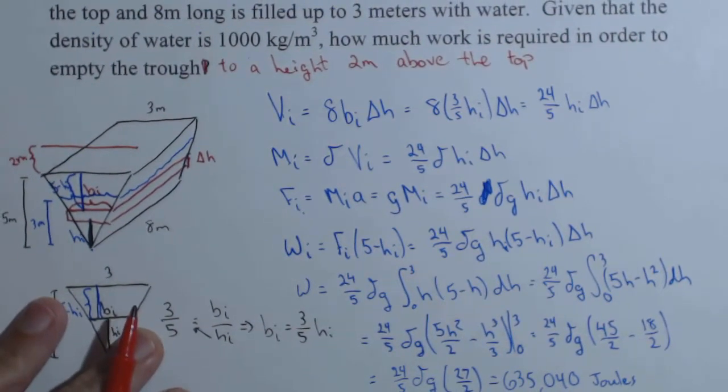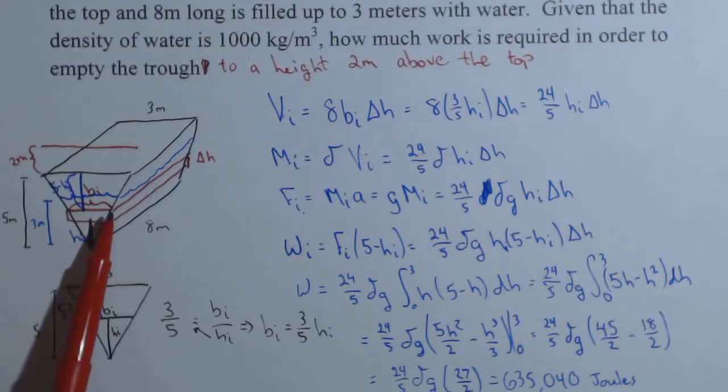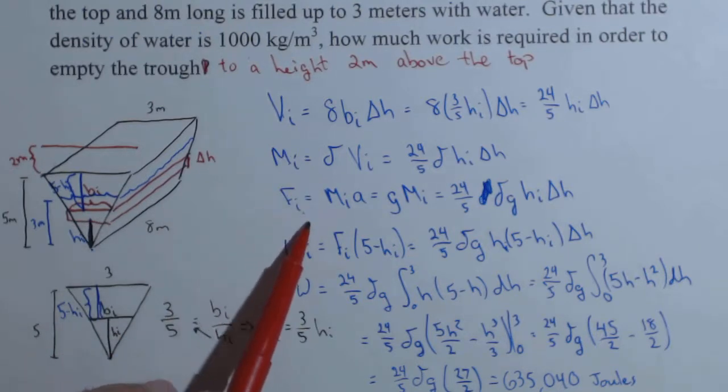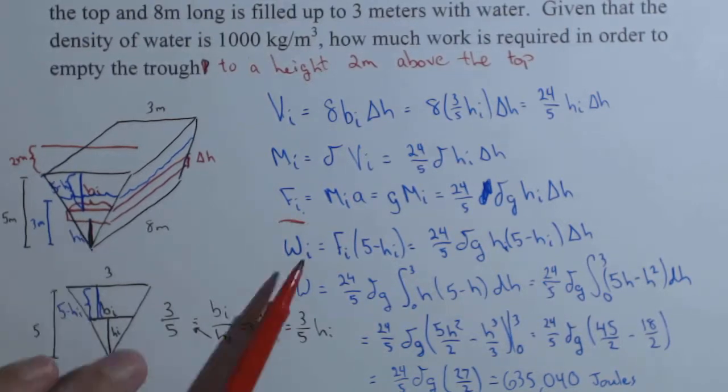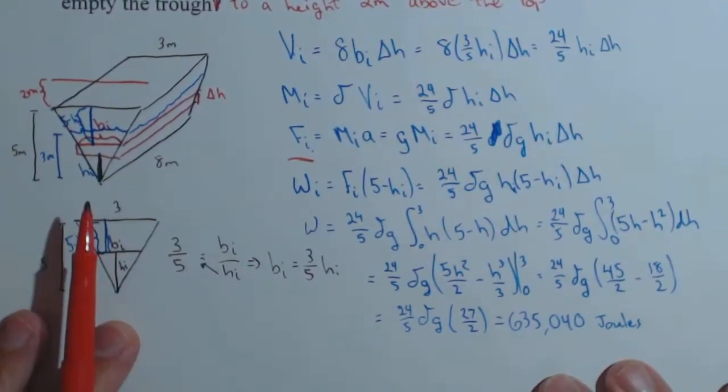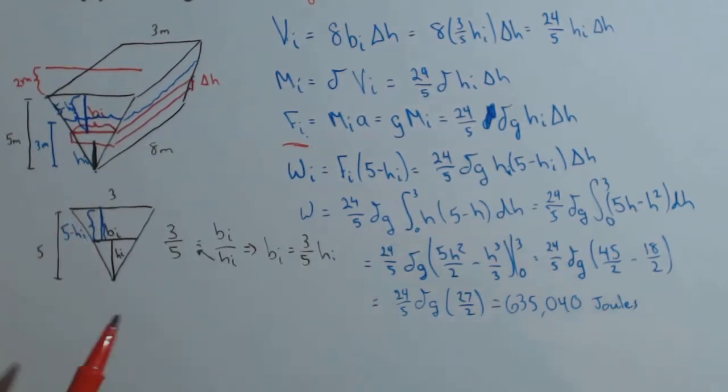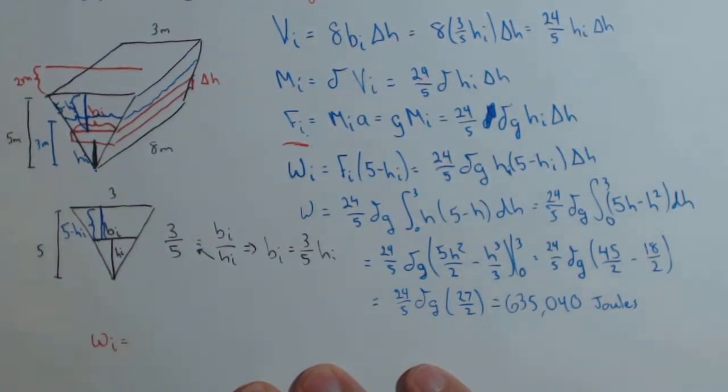If you notice what piece that affects, it doesn't affect our slice. We'd still take the same slice. Everything would still be the same up to the force on the i-th slice. Here is where our one difference would be. The work on the i-th slice. So we'll do this in red so you can see the difference.